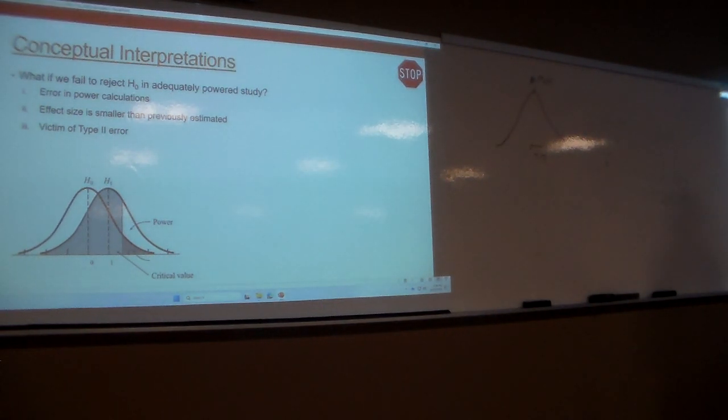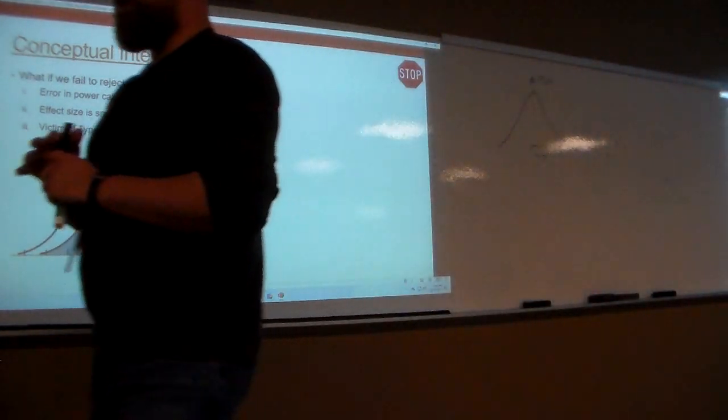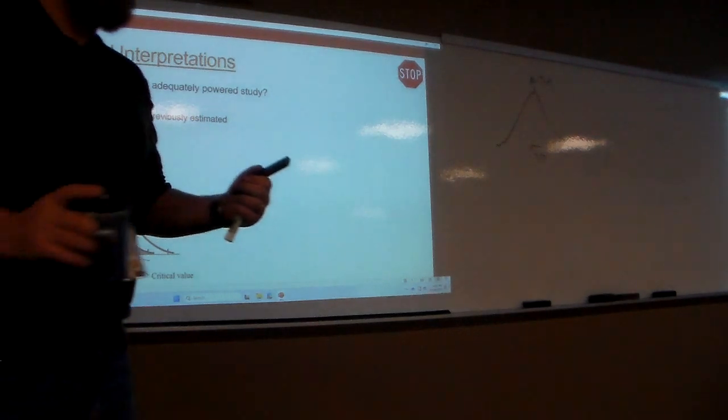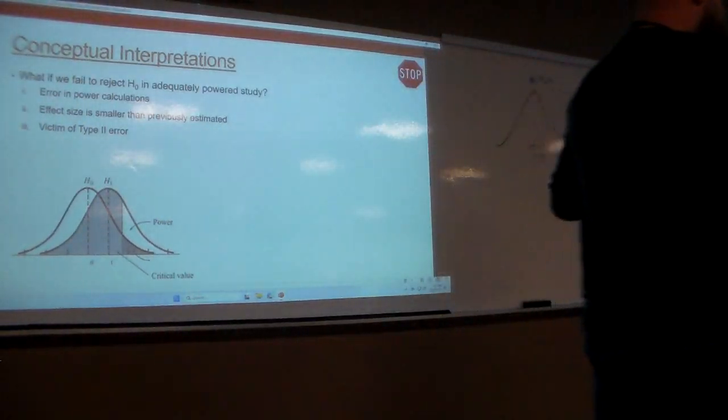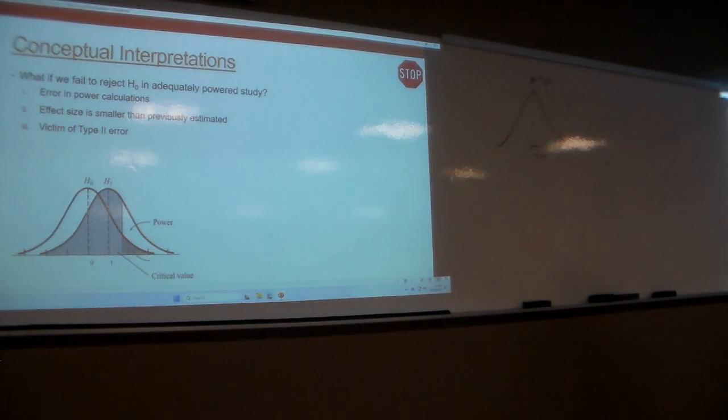So some conceptual interpretations. What happens if we go through and we do our due diligence? Like, I go through, I comb the literature. I find what I think is going to be a reasonable effect size given the existing literature. It's stuff that I've done, it's stuff that I'm planning to do. It's a study that looks similar to what I'm planning to do. I go through calculating effects, use that effect size estimate to calculate power for my test. It tells me I need this many people. I go through and collect that many people, run my tests, and I fail to reject the null hypothesis. Like, how do I go through and make sense of this?